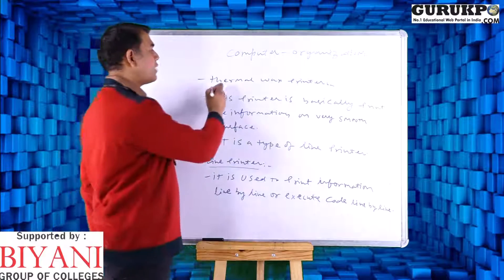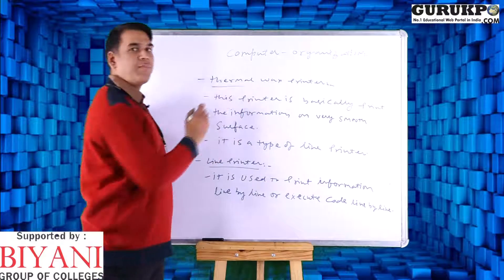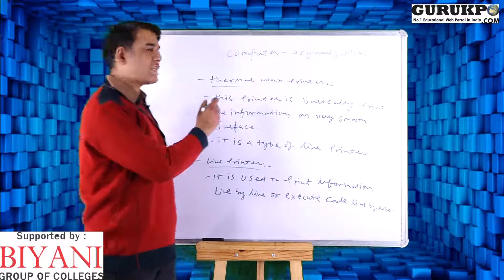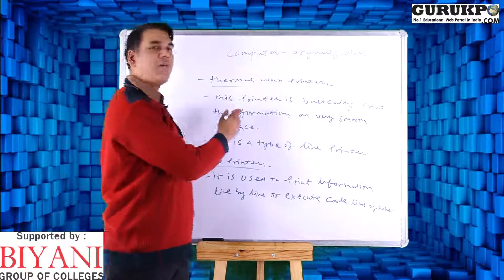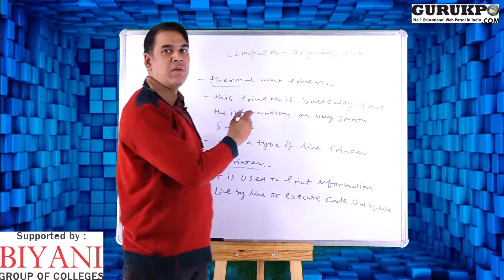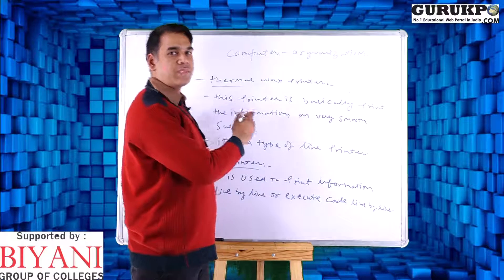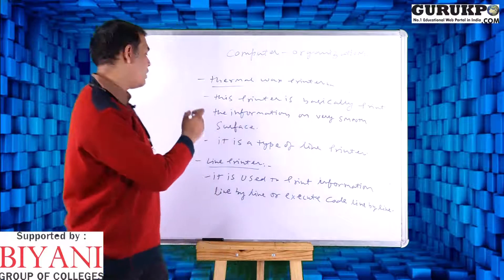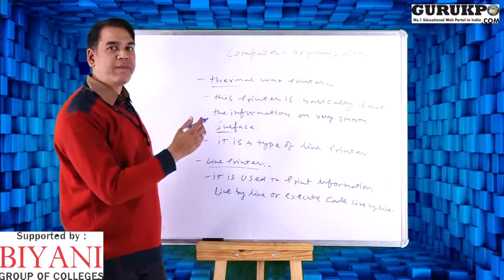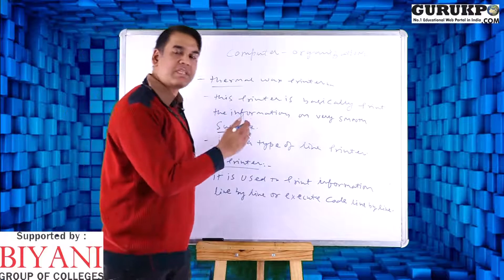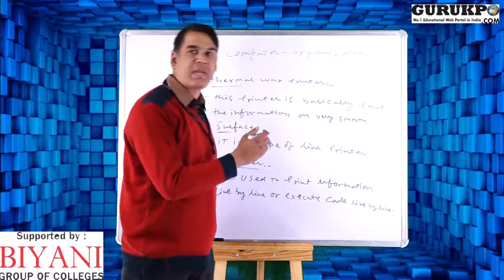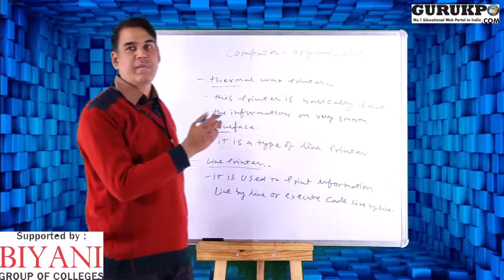Let us have a discussion on another type of printer which is called thermal wax printer. Basically this type of printer prints information on a very smooth surface. We can also say that it is a type of line printer. A line printer is basically used to print information line by line or execute the code line by line.